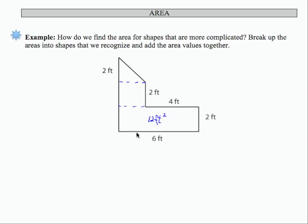If this length is 4 and this length is 6, then this length is 2. Therefore, I have a square of 2 feet by 2 feet. The area of that is 2 times 2, or 4 feet squared.